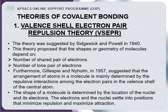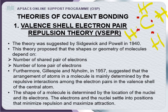The first theory is Valence Shell Electron Pair Repulsion theory. This theory was suggested by Sidgwick and Powell in 1940. It proposed that the shapes or geometries of molecules depend on: (1) the number of shared pairs of electrons present as covalent bonds, and (2) the number of lone pairs of electrons. For example, in methane, carbon holds four electrons, and each hydrogen shares one electron with carbon, forming four bond pairs.